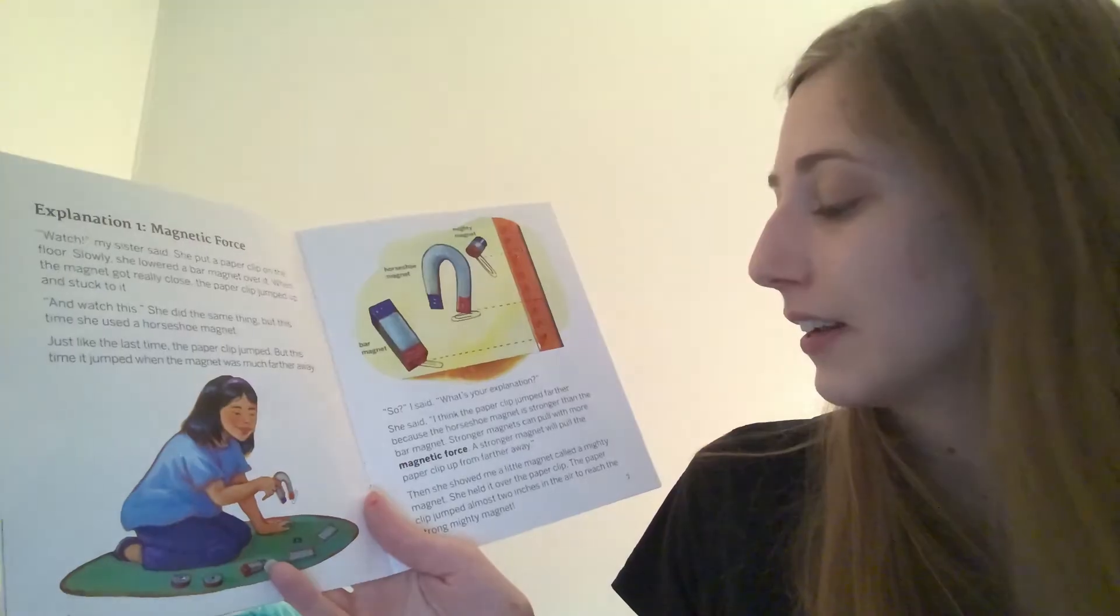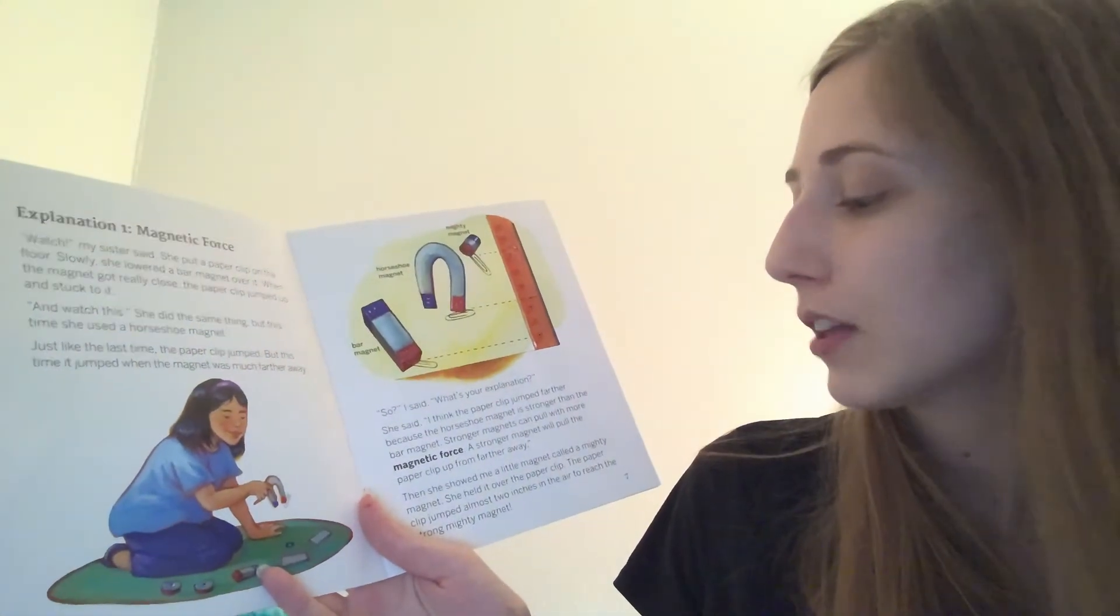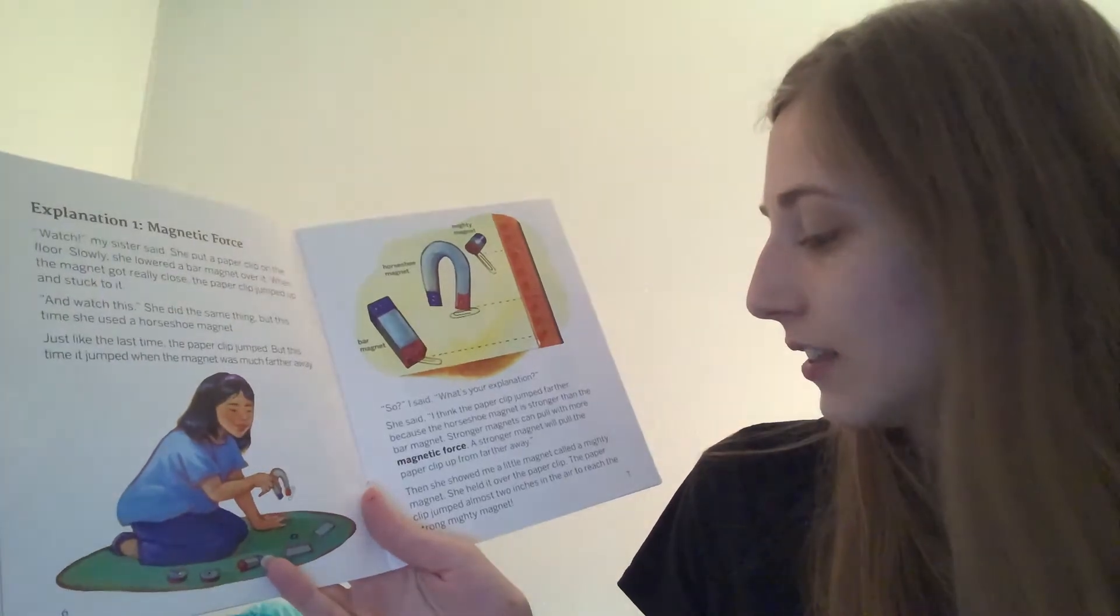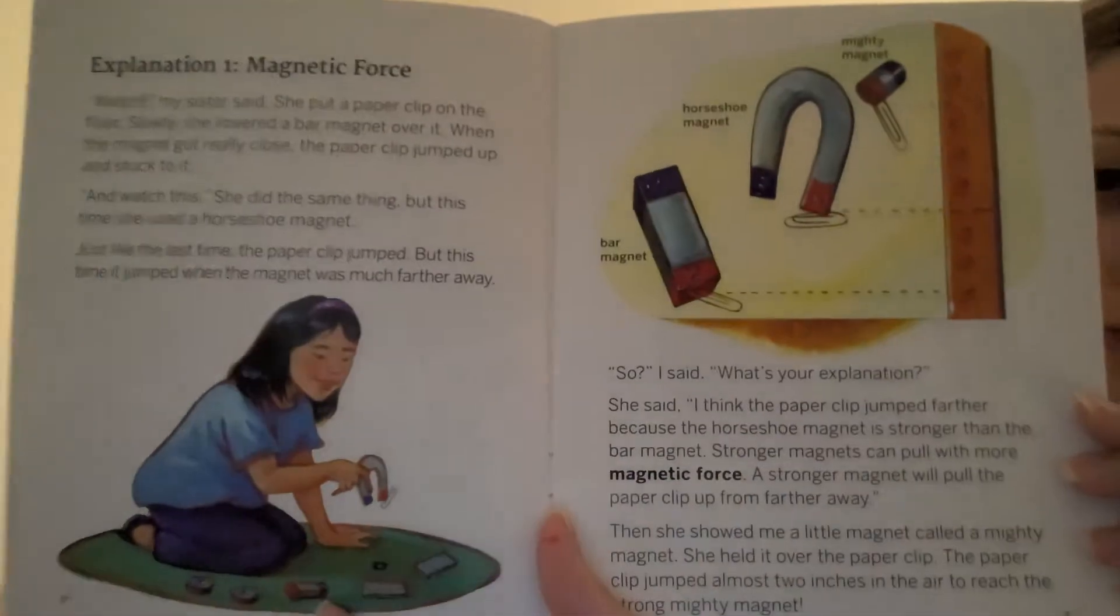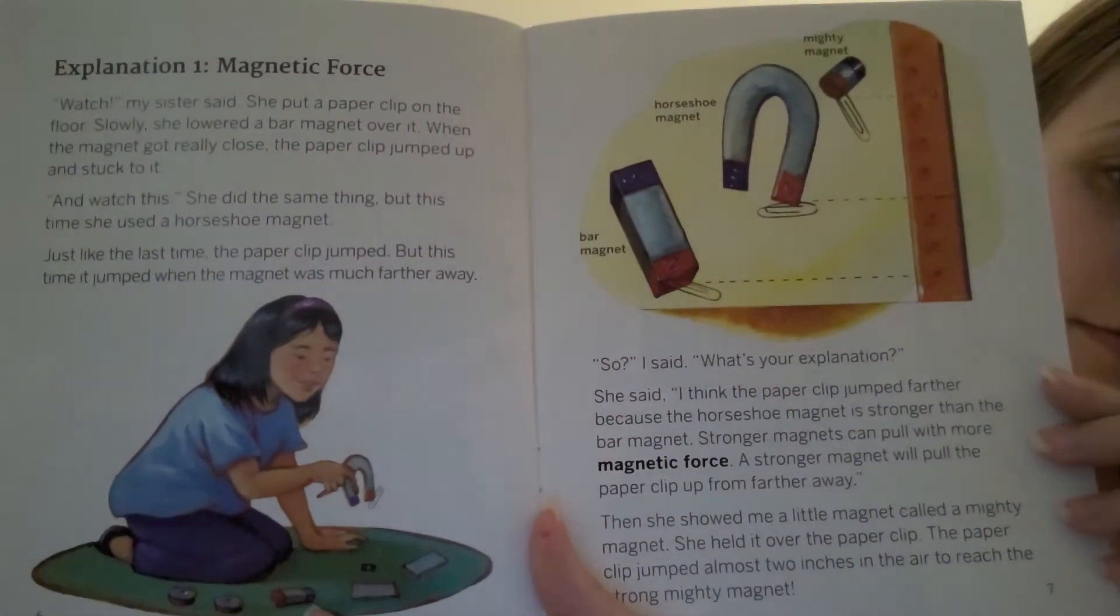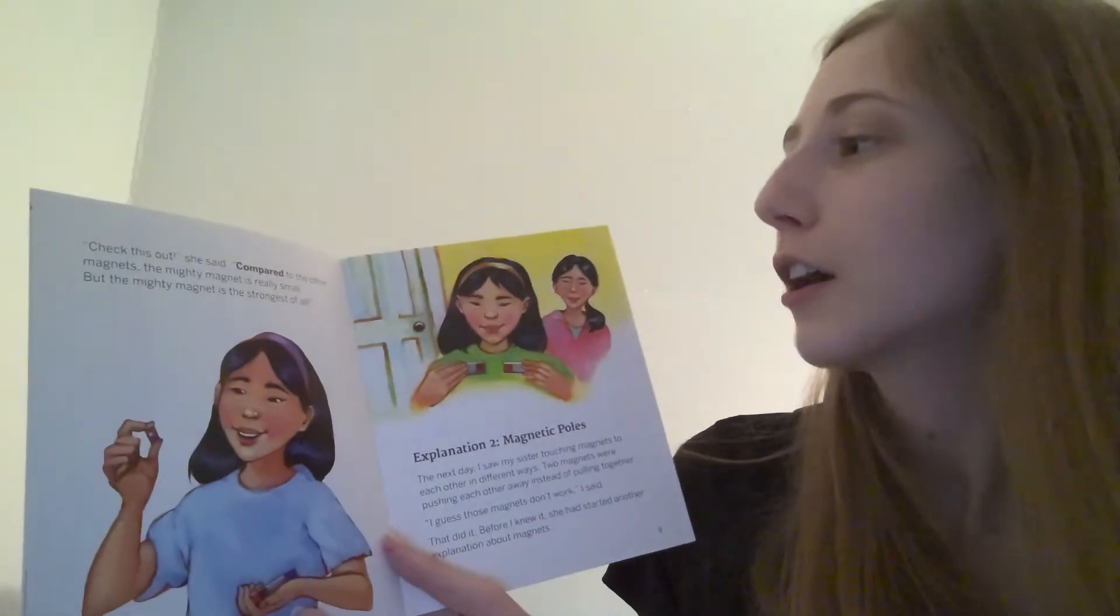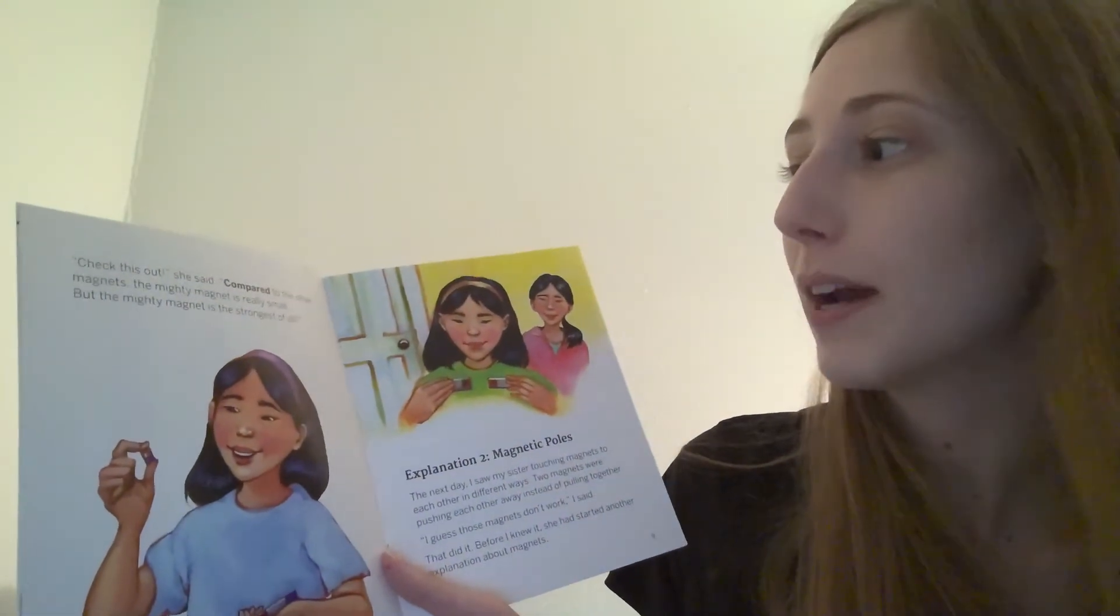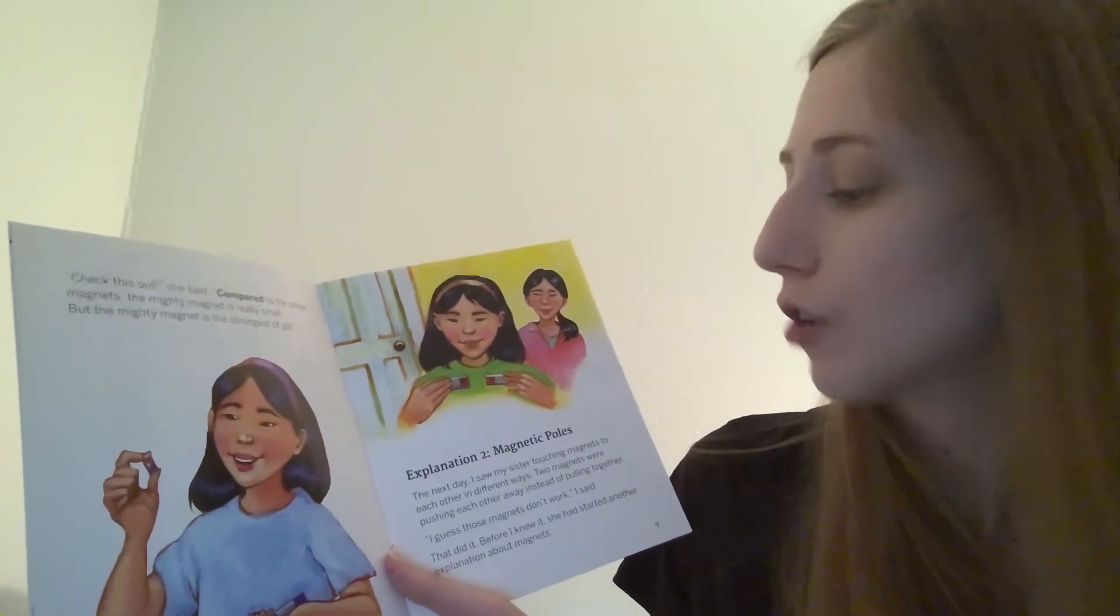Then, she showed me a little magnet called a mighty magnet. She held it over the paper clip. The paper clip jumped almost two inches in the air to reach the strong, mighty magnet. Check this out, she said. Compared to the other magnets, the mighty magnet is really small. But the mighty magnet is the strongest of all.